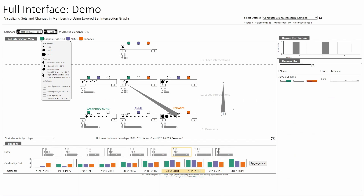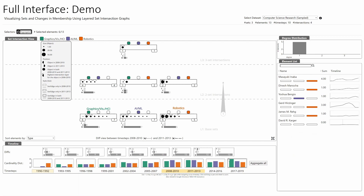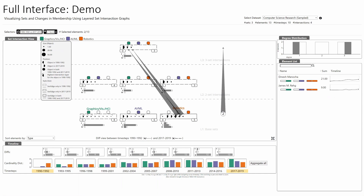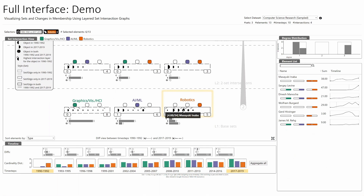To show evolution between the first and last time steps, we select them for the diff view. Two researchers went from publishing in Robotics to all three research fields: Dinesh Manocha and James M. Rigg. Two other researchers — Masayuki Inaba and Yoshua Bengio — published in both time steps but only in one field each: Masayuki in Robotics and Yoshua in AI/ML. In both cases, the bigger right semicircle shows they published more articles in the later time step.